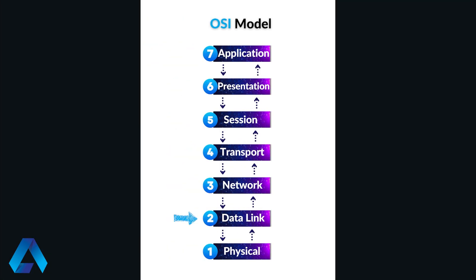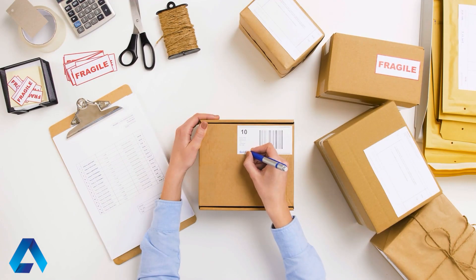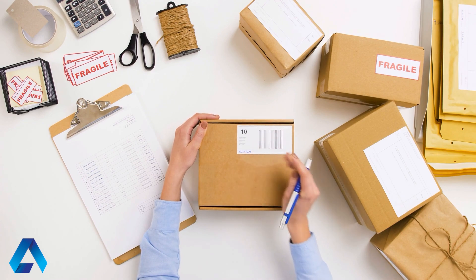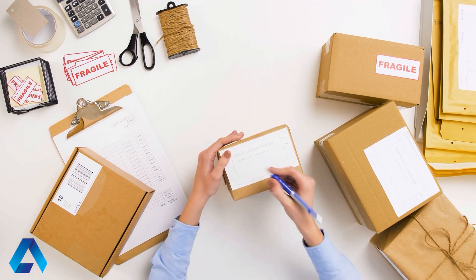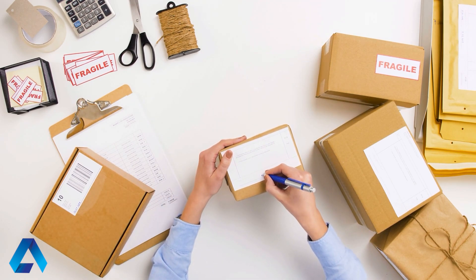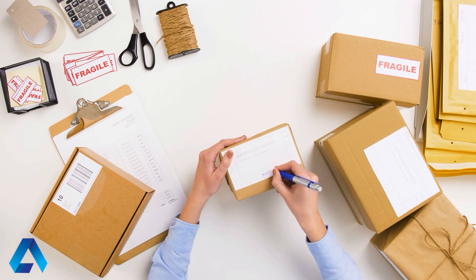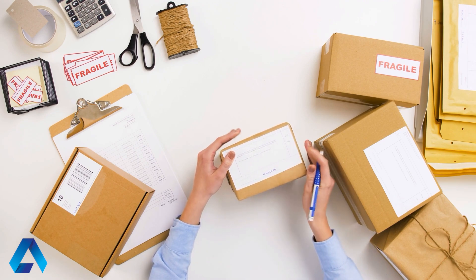Layer 2, data link. This layer provides a reliable means of transmitting data over a physical link, using techniques such as error detection and correction, and flow control. You can view this layer as if you were sending a package to someone — you would need to label the package with the address of the person receiving it. In the same way, data is sent and received between devices on a network using not mailing addresses, but MAC addresses.